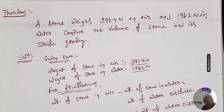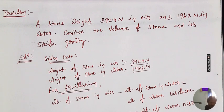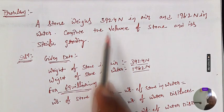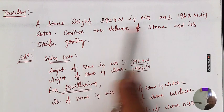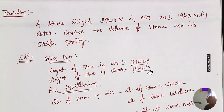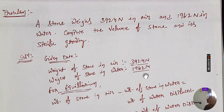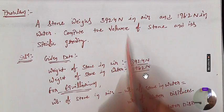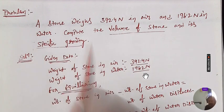Hello students. Today we are going to solve a problem on the center of buoyancy. You can see the problem here. The problem states that a stone weighs 392.4 Newton in air and 196.2 Newton in water. Calculate the volume of the stone and its specific gravity.